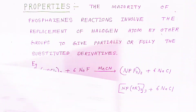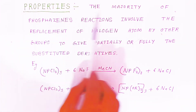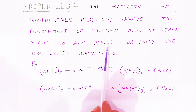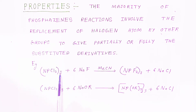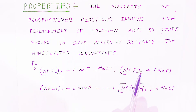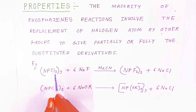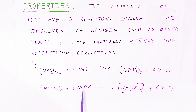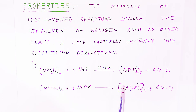Now we are going to see the properties of this compound. The majority of phosphazene reactions involve the replacement of halogen atoms by other groups to give partially or fully substituted derivatives. Hexachlorotriphosphazene reacts with sodium fluoride in the presence of methyl cyanide to form hexafluorotriphosphazene. You can replace the chloride by fluoride, obtaining 6 sodium chloride molecules. Similarly, hexachlorotriphosphazene reacts with sodium alkoxide, replacing chloride with OR alkoxy groups.